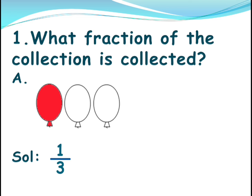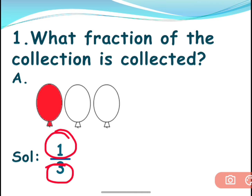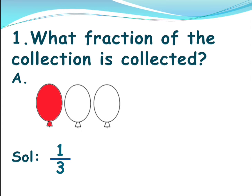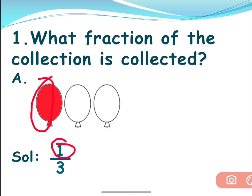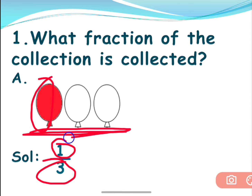This top number is known as the numerator, and the number written below is called the denominator. The numerator tells us how many things are colored or shaded, and the denominator tells us the total number of things. So in this way you need to write the fractions.